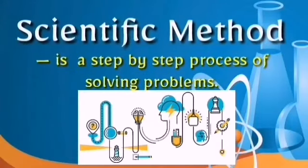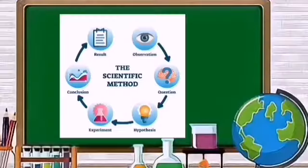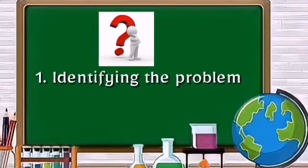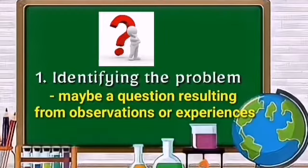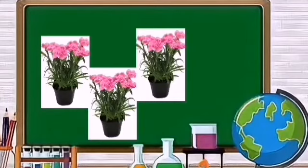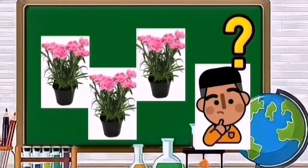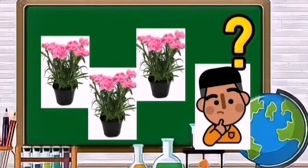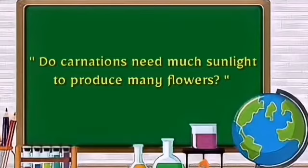Now let us discuss the scientific method. The scientific method is a step-by-step process of solving problems. First is identifying the problem. A problem may be a question resulting from observations or experiences. For example, you grow several potted carnations in your garden and are curious why they produce only few flowers, though you apply the best kind of fertilizer. You notice they are placed in an area where sunlight is scarce, and you wonder if your plants are receiving the right amount of sunlight. Your problem may be stated as: Do carnations need much sunlight to produce many flowers?